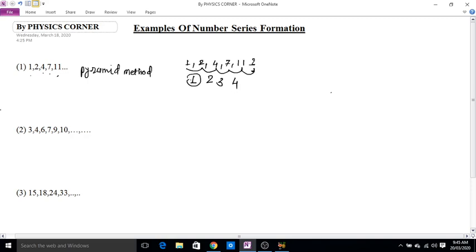Looking at the differences 1, 2, 3, 4, the pattern is clear. So x minus 11 equals 5. Therefore, x equals 11 plus 5, therefore x equals 16. So what happens here? 16.